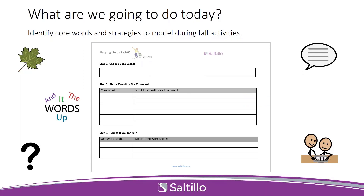Tonight we are going to be identifying core word strategies that we can use to model core words during fall activities. The first handout we have is our organizational tool — this is what we will be using together to plan our core words, our questions and comments for modeling, and how we're going to model. We suggest you download this so you can jot down your own thoughts and ideas as we do it together, and use it later as your own tool or to give to families as a resource.